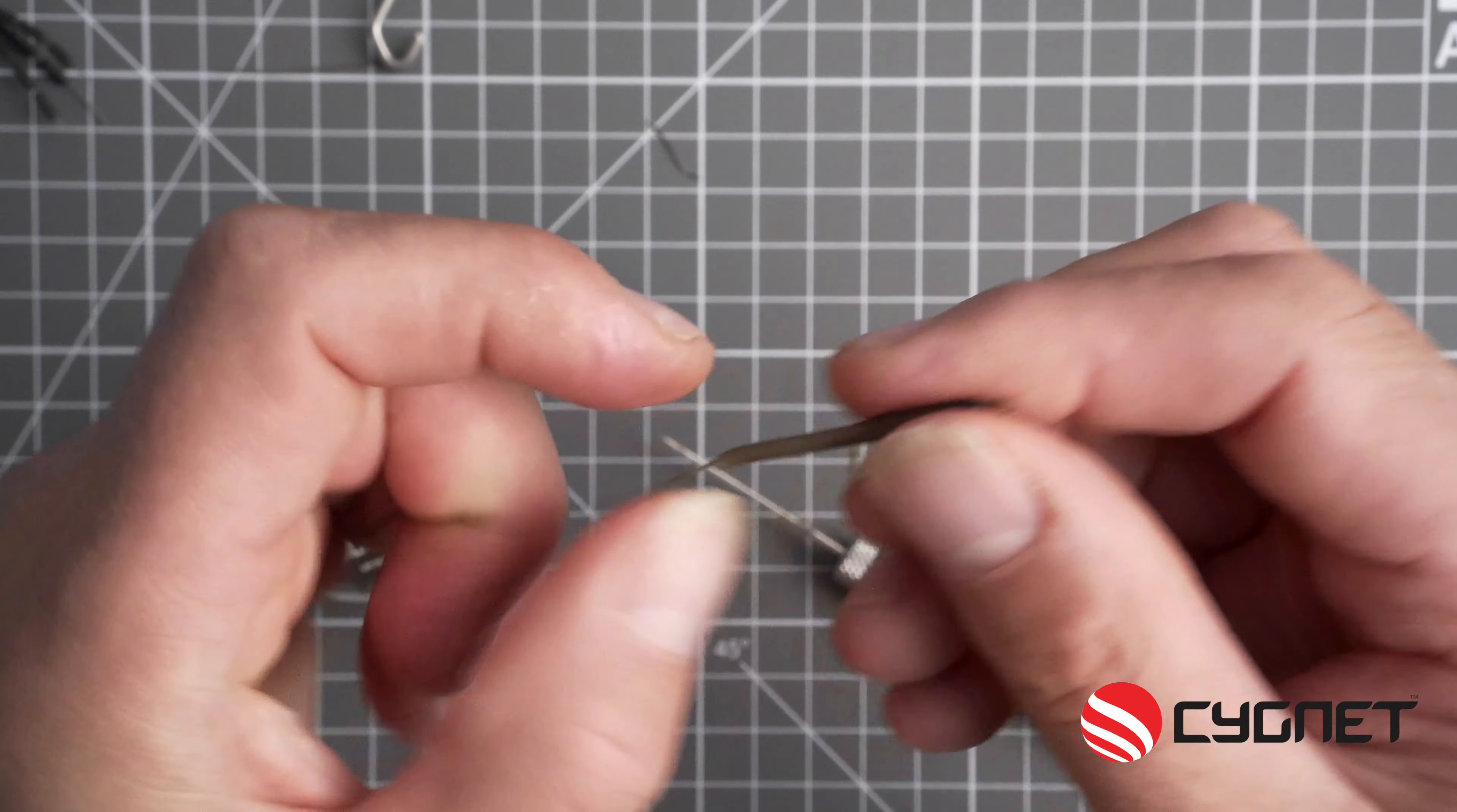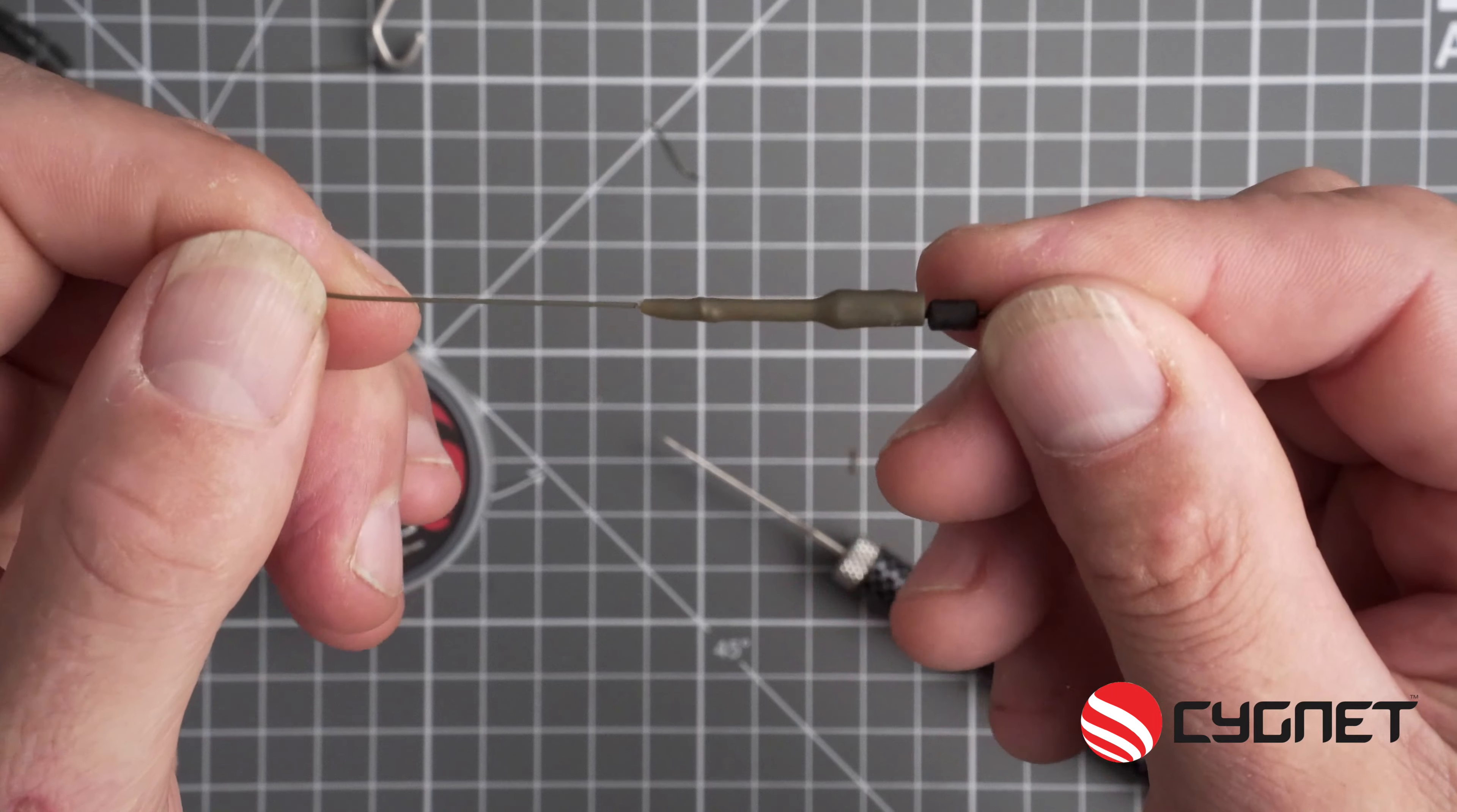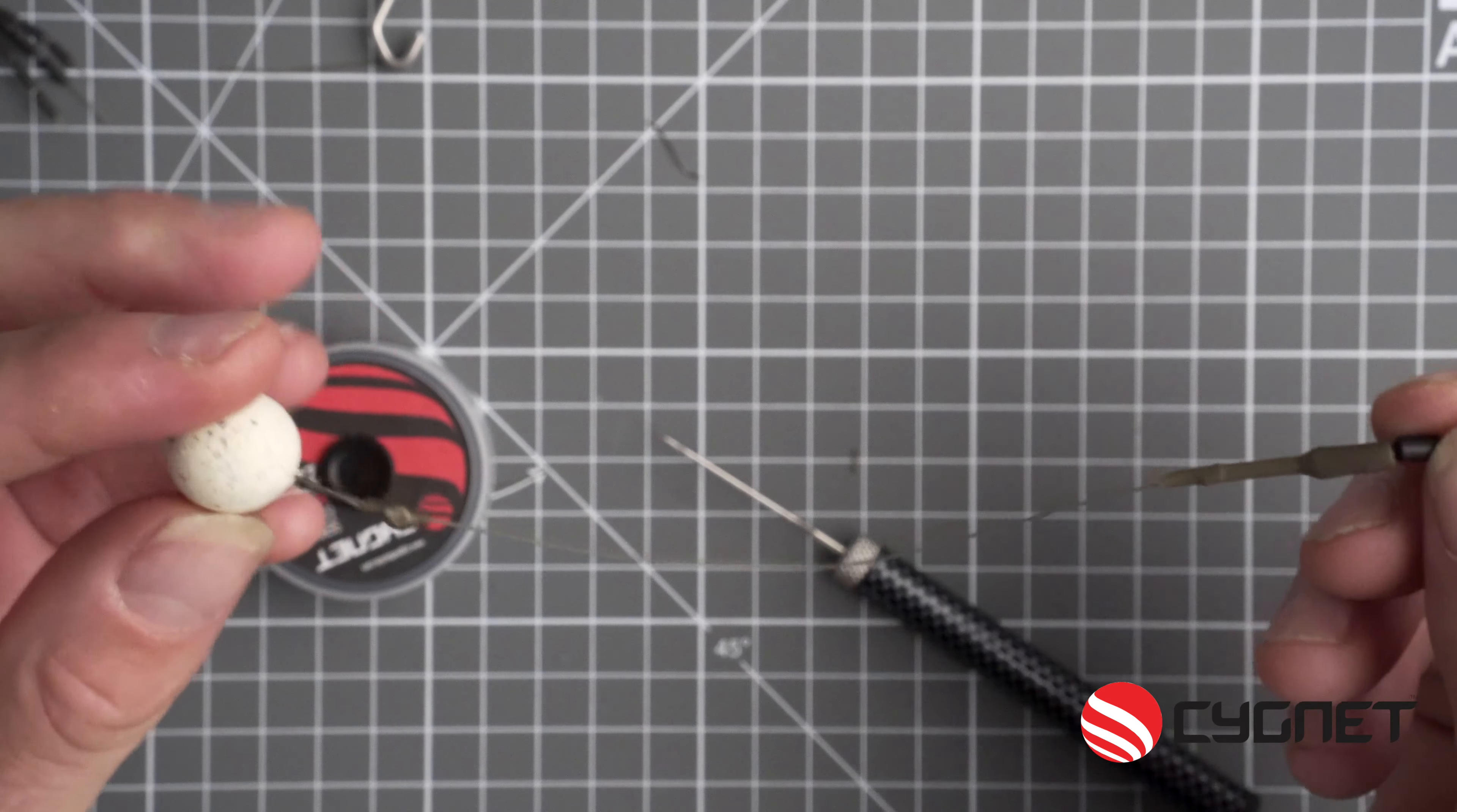And that is the wafter rig or a bottom bait. There it is, the completed wafter rig.